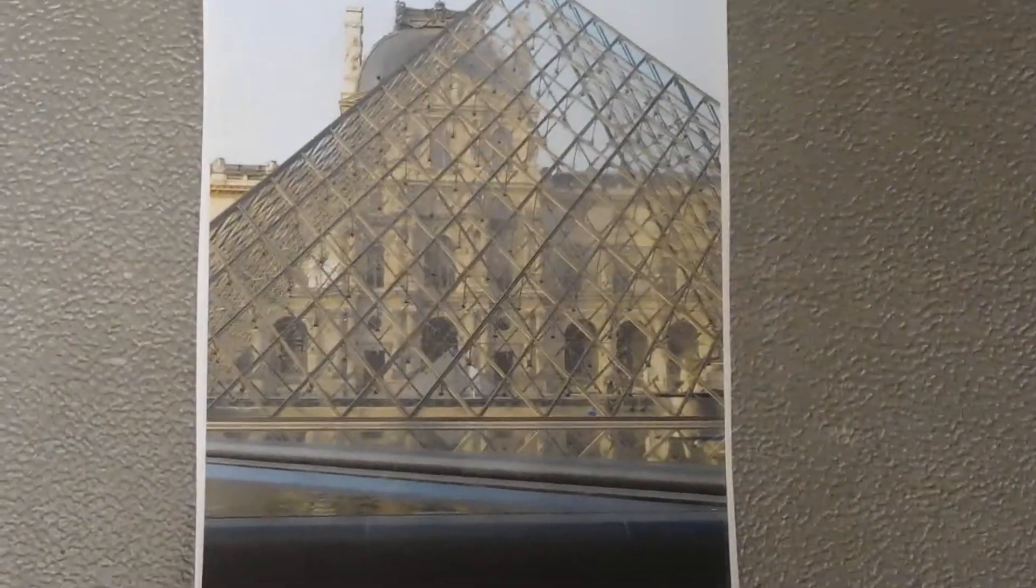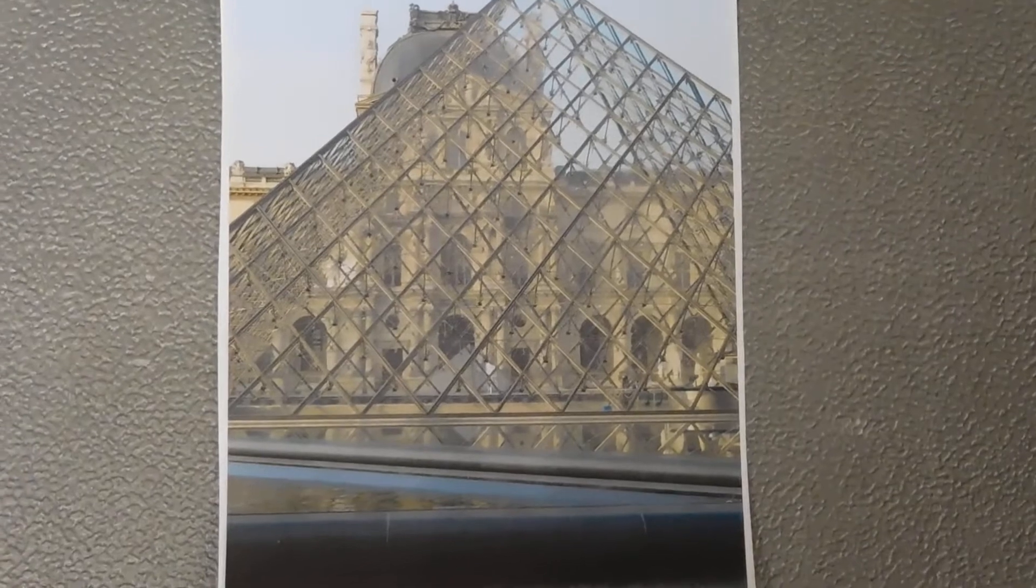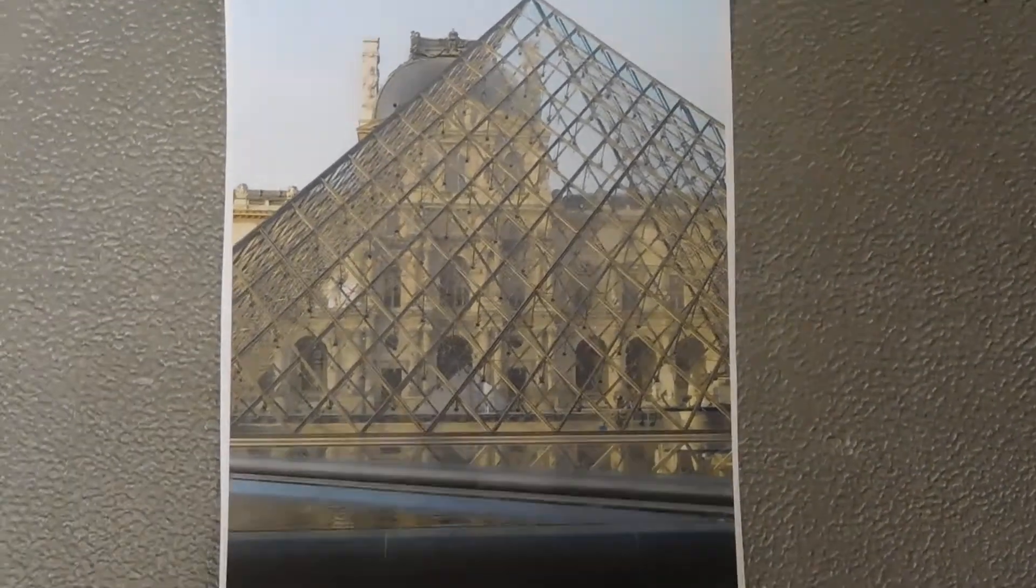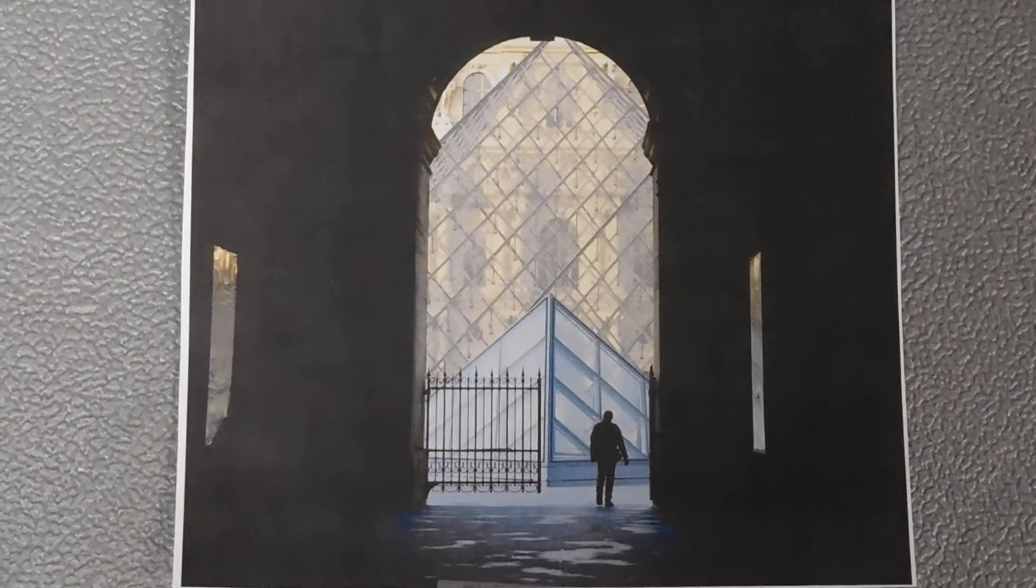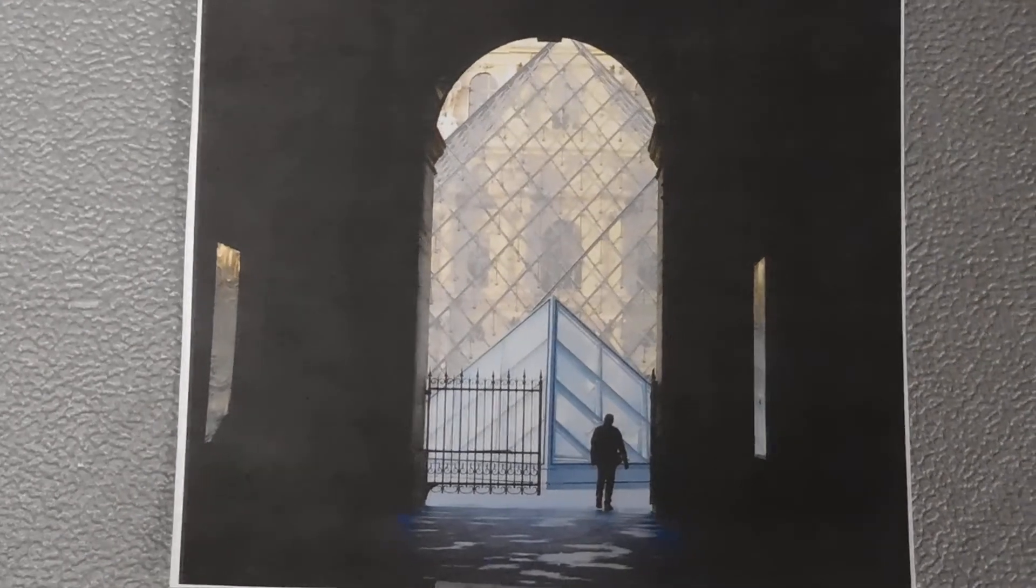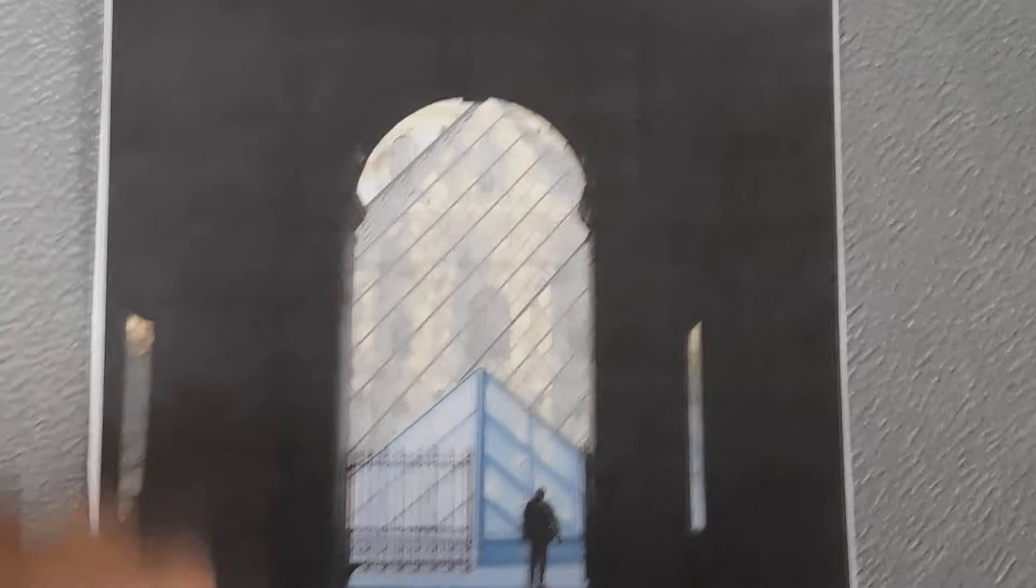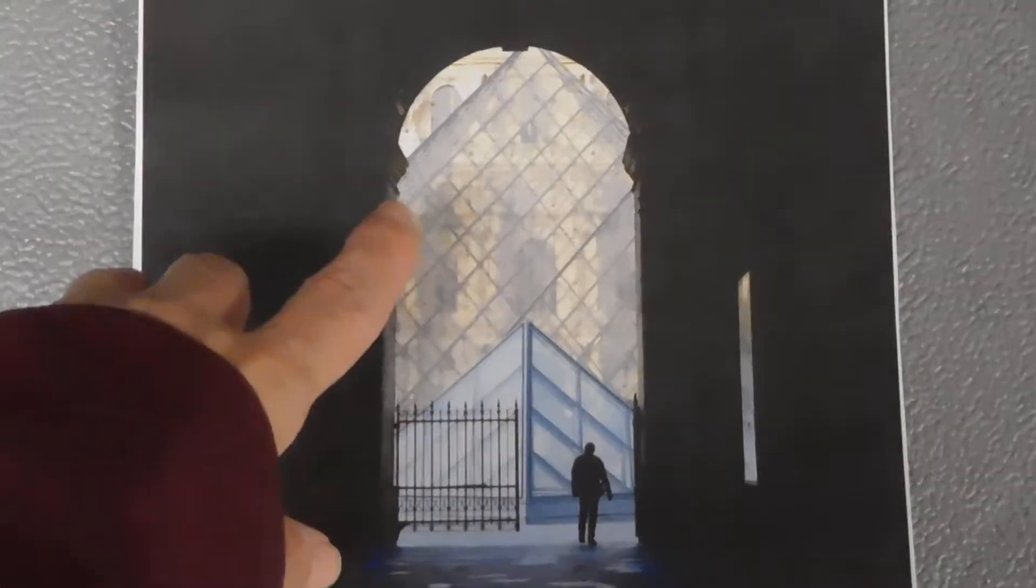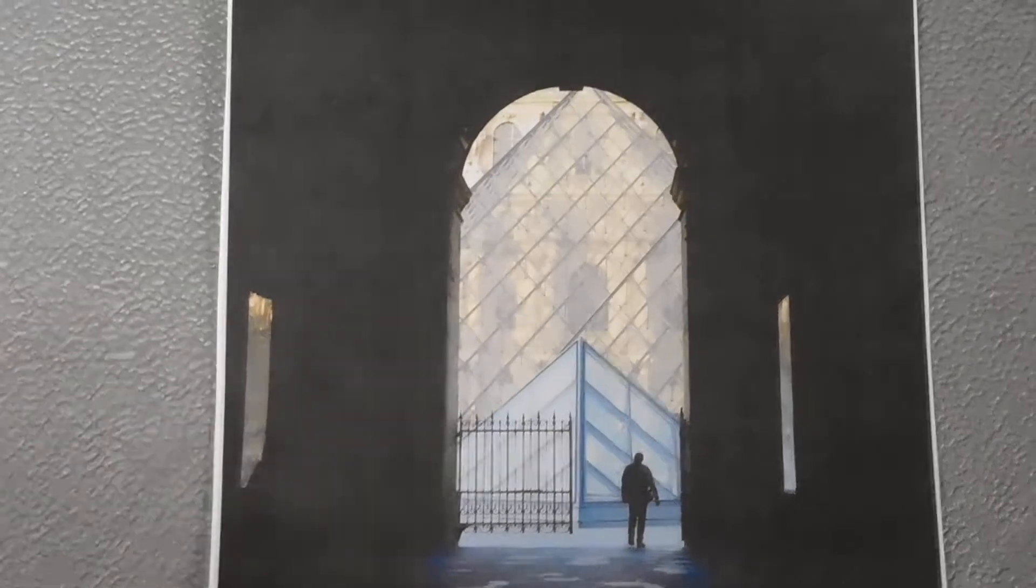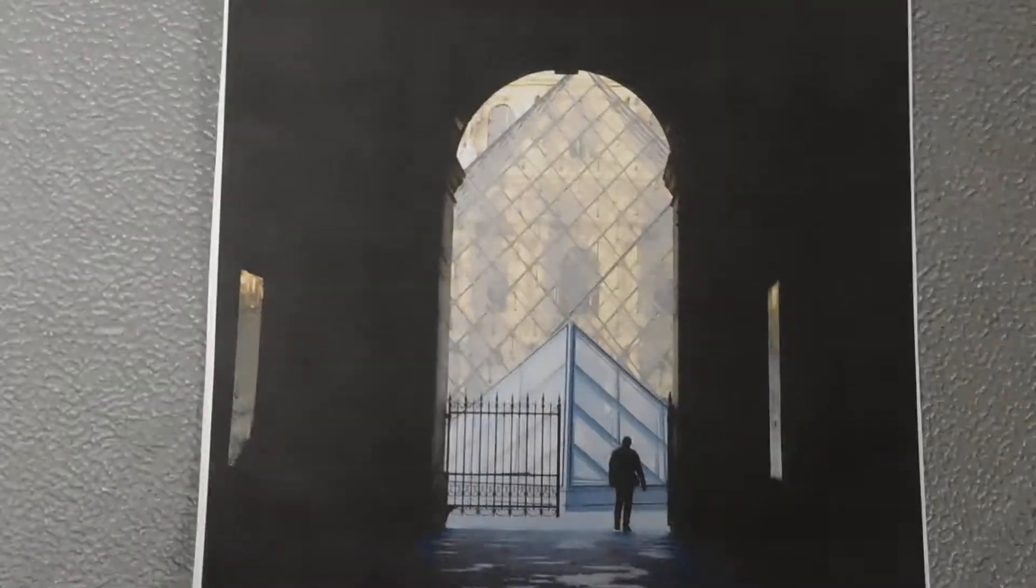So I've got a picture here where you can see the pyramid, and behind it is the Louvre Museum. And I have another photo here, coming through the Lion's Gate, which is a corridor. In this photo, you can see one of the smaller pyramids and the larger pyramid, and behind is the Louvre Museum again.